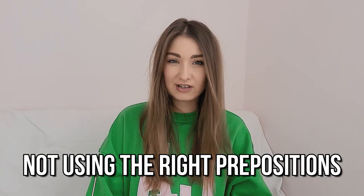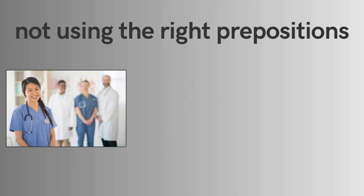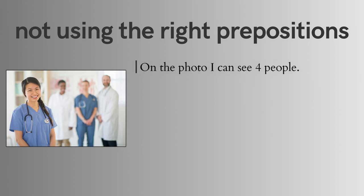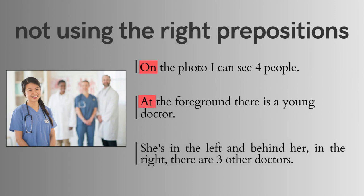Mistake number one is not using the right prepositions. Here's an example of incorrect usage: On the photo, I can see four people. At the foreground, there is a young doctor. She's in the left and behind her, in the right, there are three other doctors.